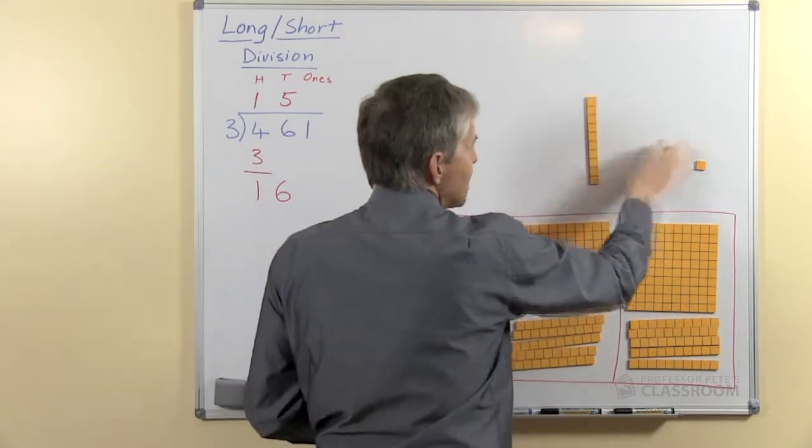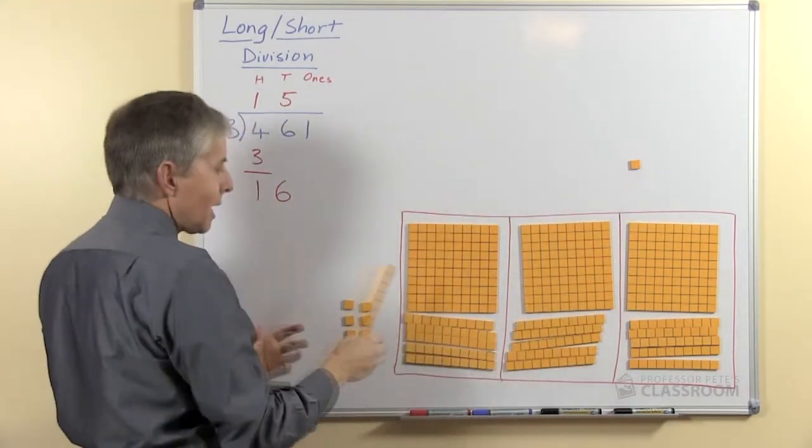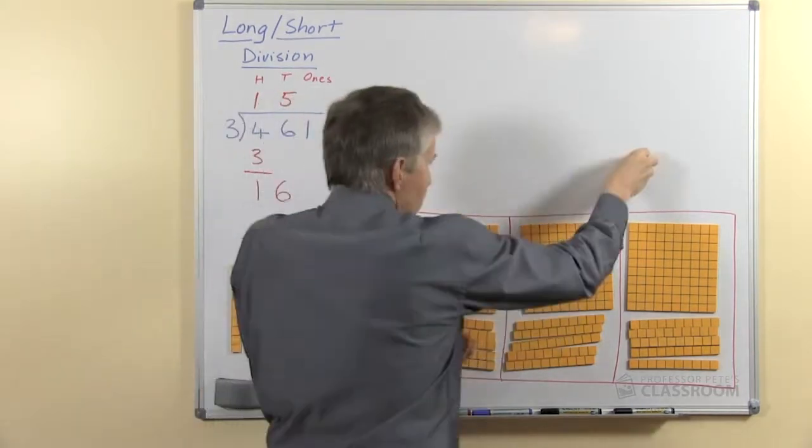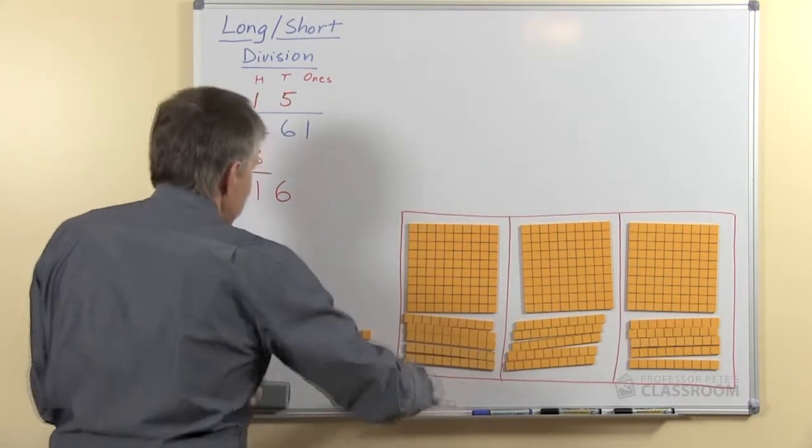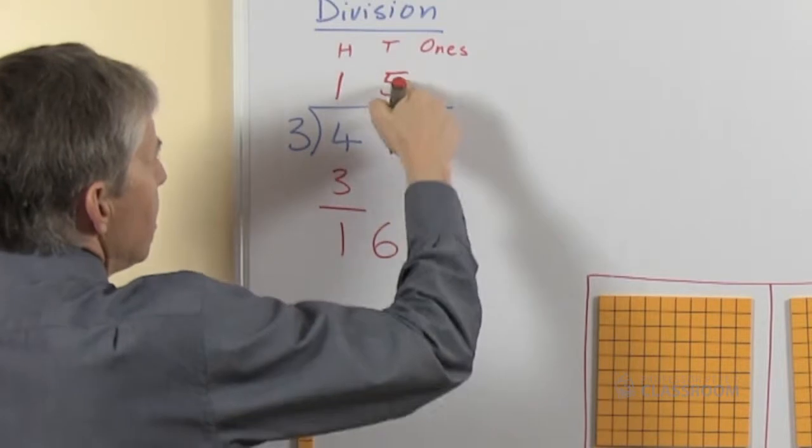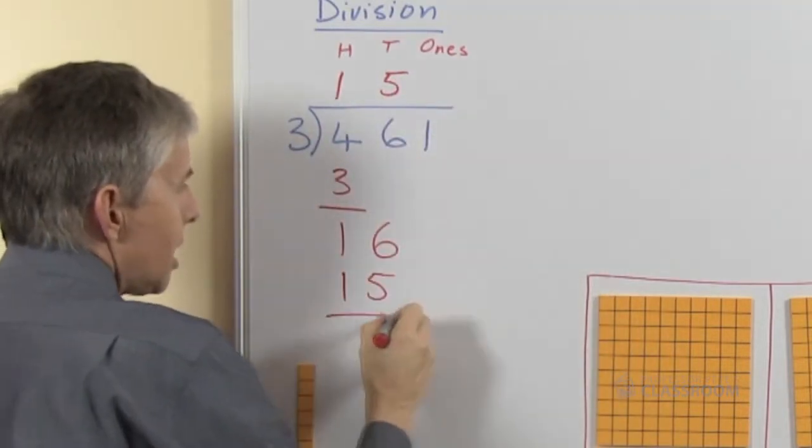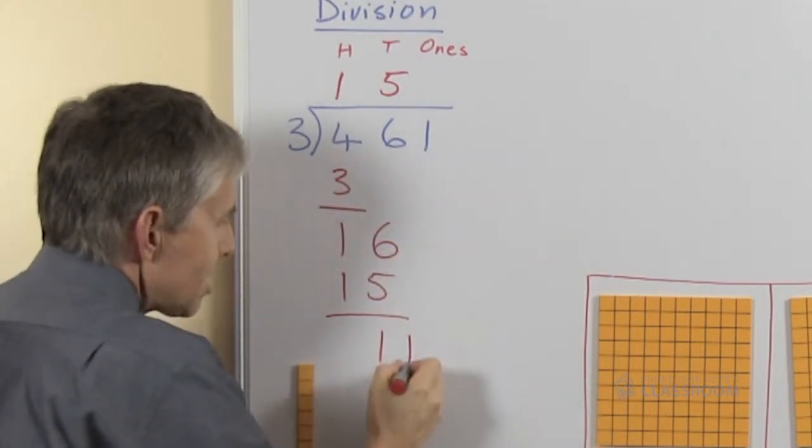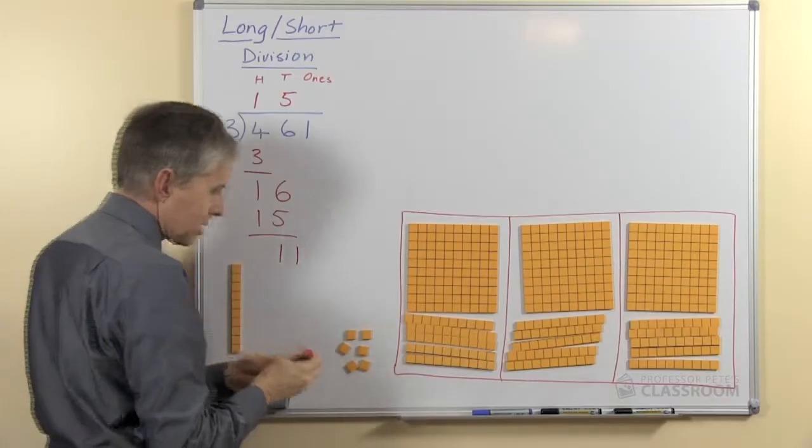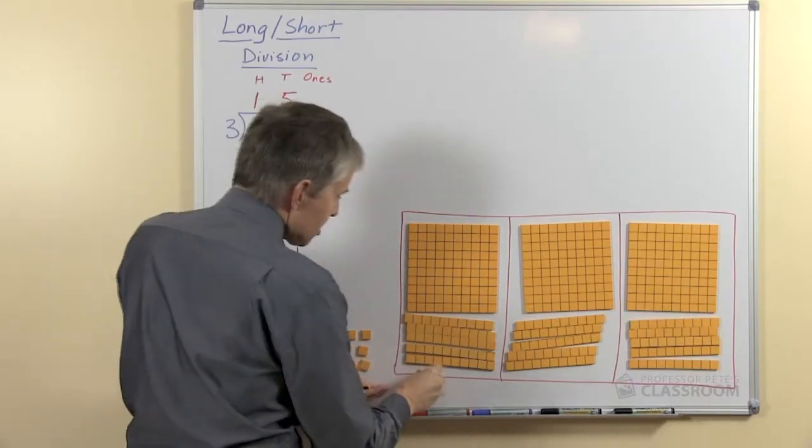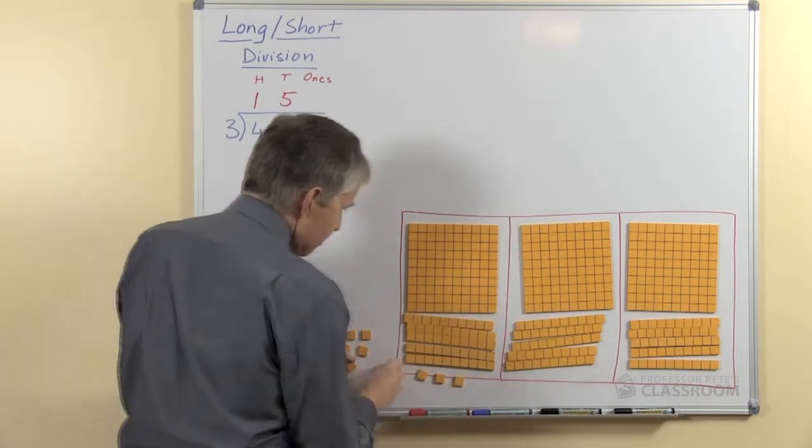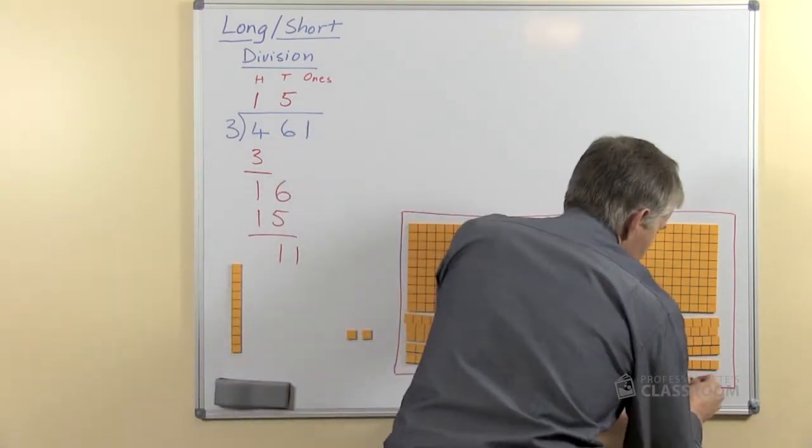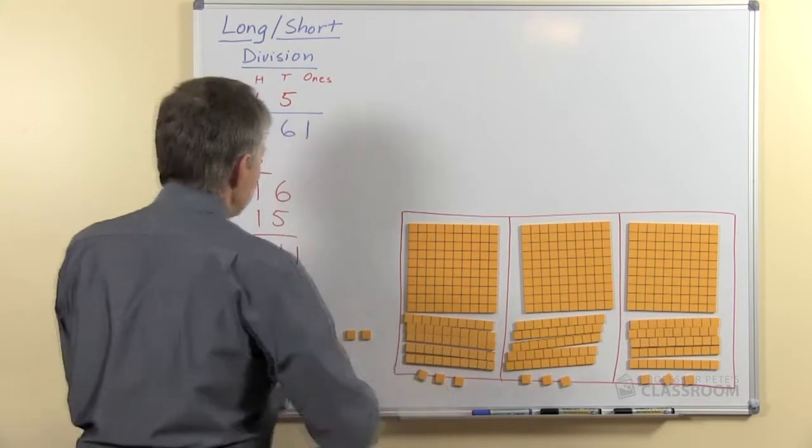Last bit, now we have 1 ten and 1 one left over. We can't share this 10 so again we're going to swap it, here I've got 10 ones. These 10 plus this one makes 11 ones, I should write that down, so I'm missing out a step here. 5 threes are 15, these are the tens that we shared out, we take that away, there will be 1 left. This 1 ten we write the 1 next to it to show 11 ones, that's what I've got here. Share 11 ones among 3, how many will each person receive?